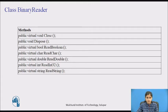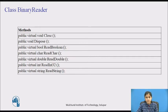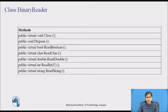The ReadDouble method reads an 8-byte floating point value from the current stream and advances the current position by 4 bytes. The ReadInt32 method returns an integer — it reads a 4-byte signed integer from the current stream and advances the current position by 4 bytes. The ReadString method returns a string from the current stream; the string is prefixed with the length encoded as an integer 7 bits at a time.